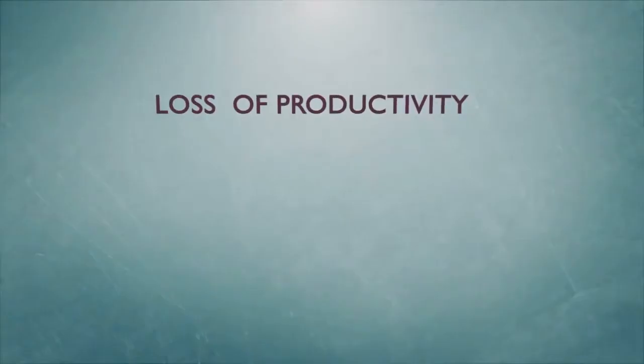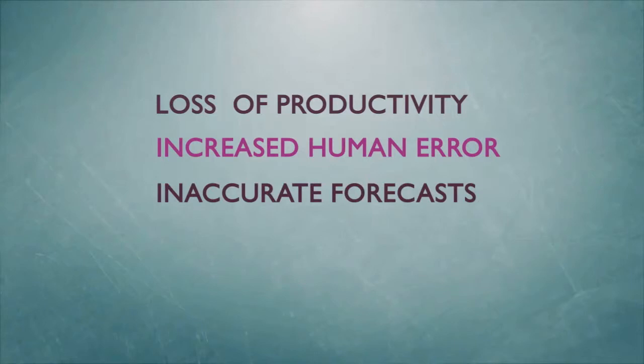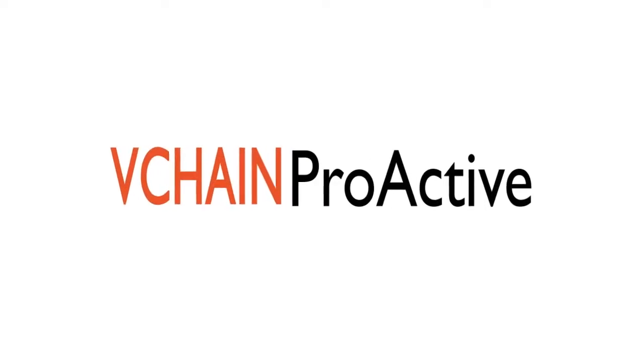The result is loss in productivity, increased human error, inaccurate forecasting, and lost revenue. That is, until he found VeChain Proactive.